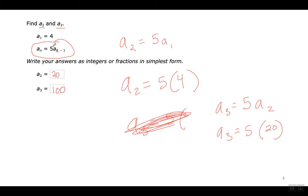Estos se deben dar cuenta que es 5 multiplicado por el término que viene antes del que estamos buscando. Para encontrar el segundo término, multiplico el término anterior por 5: 5 por 4 es 20. Para encontrar el tercer término, multiplico ese por 5, que me da 100. Así que 4 por 5 es 20, 20 por 5 es 100.